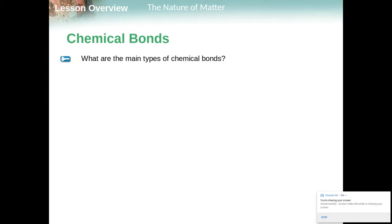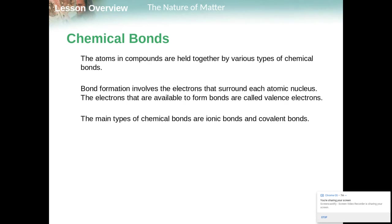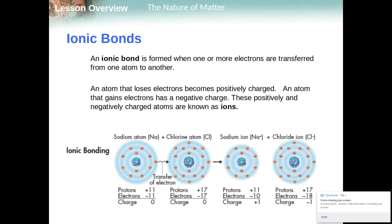Chemical bonds. How is it we even hold all this together? We've talked about our atoms all the way down at the protons, neutrons, and electrons. But once we make them into atoms and elements and compounds and molecules, how do we hold them together? The atoms and compounds are held together by various types of what are called chemical bonds. Bond formation involves the electrons that surround each atomic nucleus. The main types are ionic and covalent. And we're talking about a special one called hydrogen bonds, sometimes called van der Waals forces.